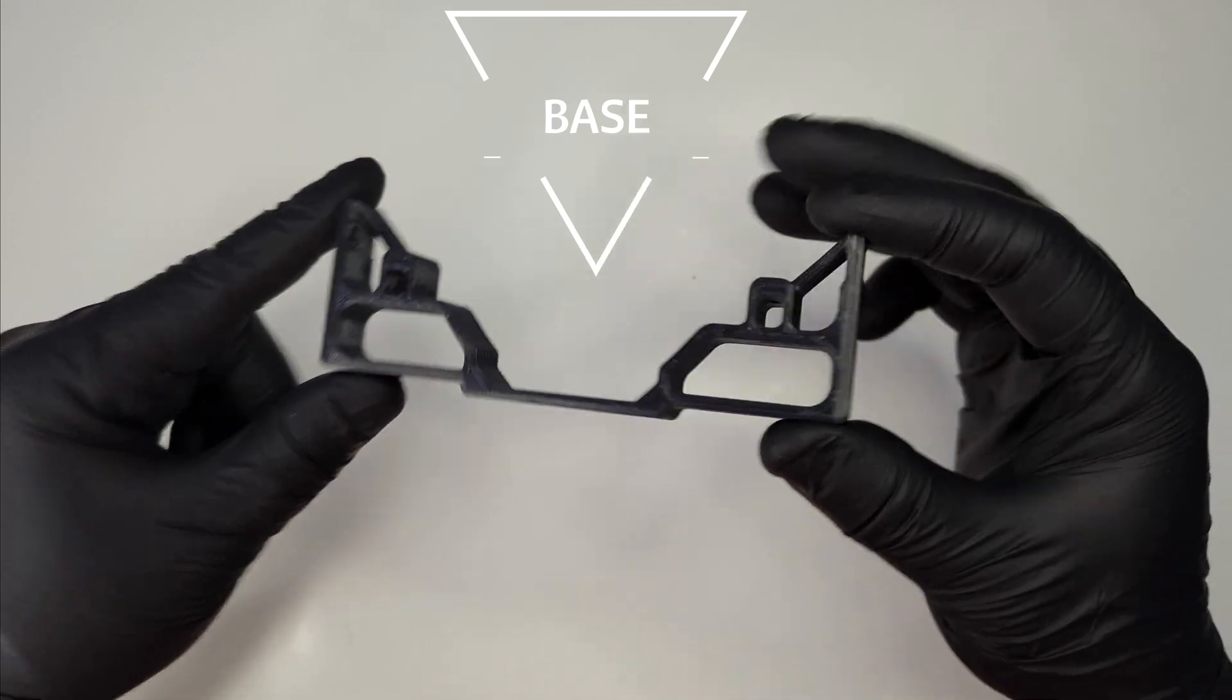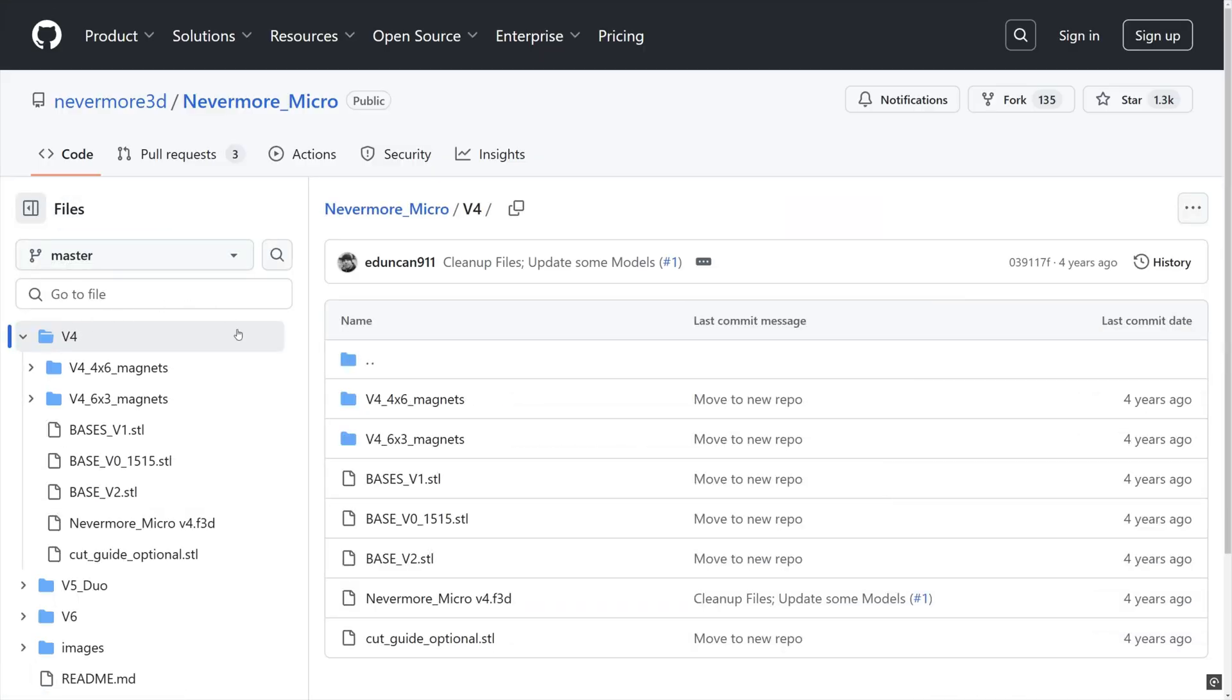You can find and download all the models from Nevermore's GitHub page. The link will be in the description below.